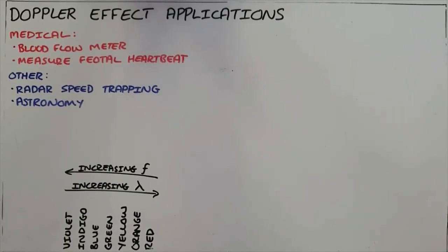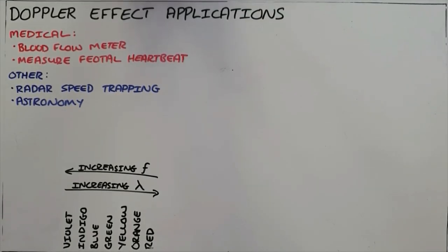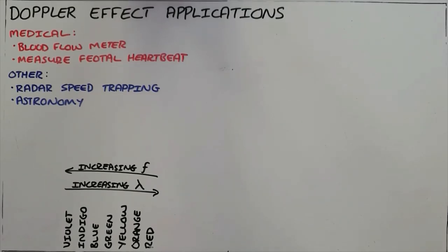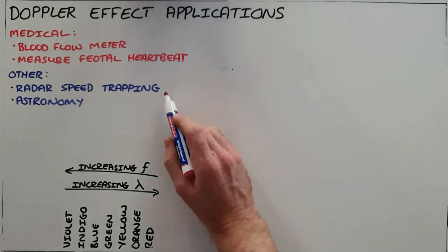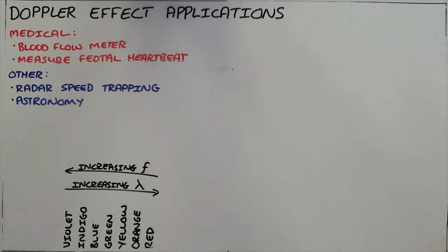The Doppler effect has many real-world applications. The first is in a blood flow meter in the medical world, where the Doppler effect can be used to determine the speed and strength at which blood is flowing. The second is measuring the heartbeat of a fetus. Another application is radar speed trapping, where waves are bounced off an oncoming or moving vehicle and the frequency at which those waves return to the device is used to determine the vehicle's speed.